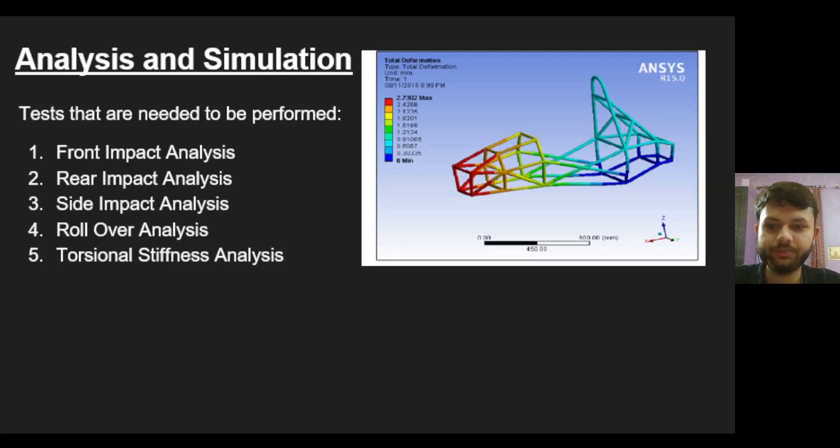Coming to the last topic of this presentation, the analysis part. You need to perform many tests for your chassis. These are as follows: the front impact analysis. In this analysis, the loading point is the frontmost member of your chassis. The constraint will be the rear suspension hard points. The force is calculated by using the formula F = ma, and then the further analysis is done.